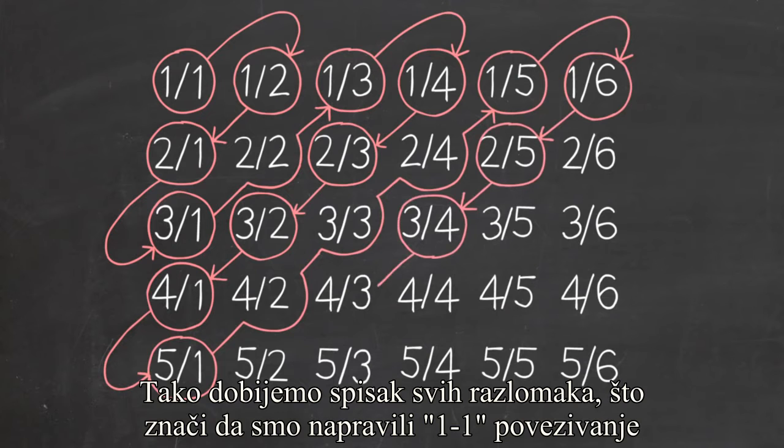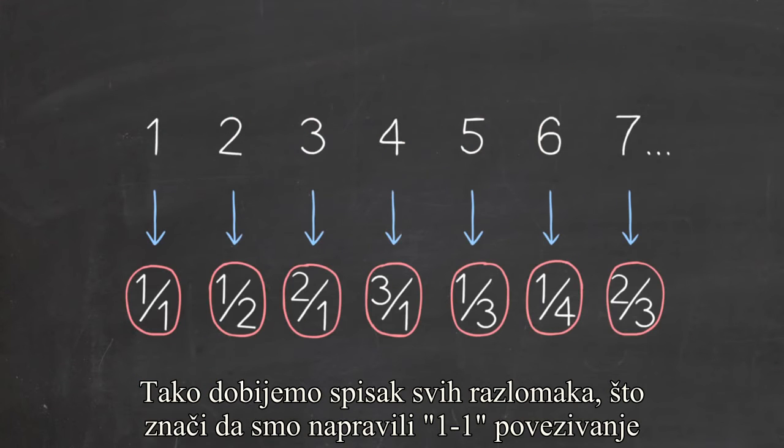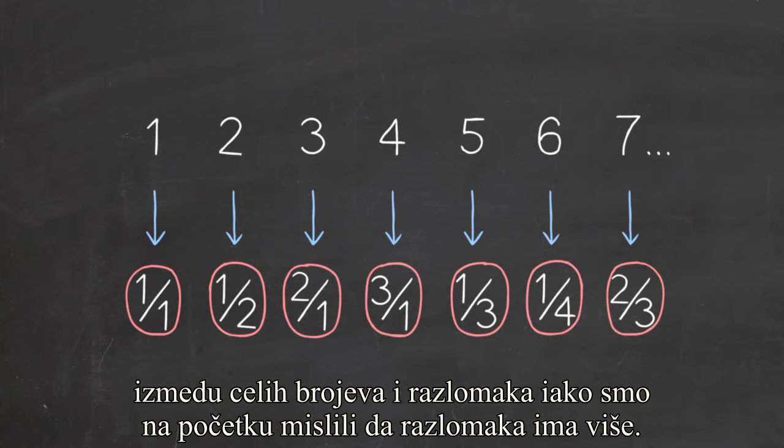And so we get a list of all the fractions, which means we've created a one-to-one match between the whole numbers and the fractions, despite the fact that we thought maybe there ought to be more fractions.